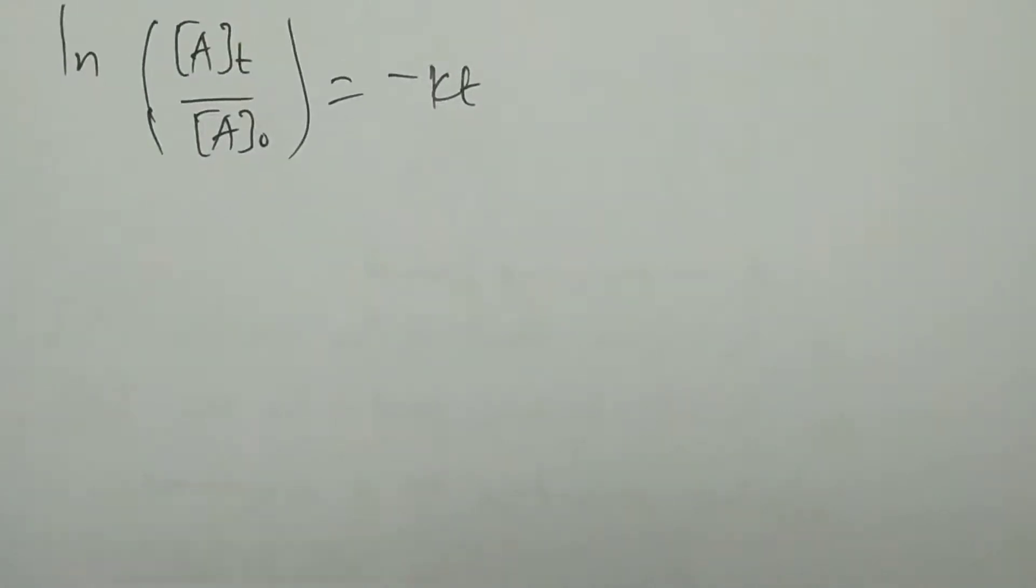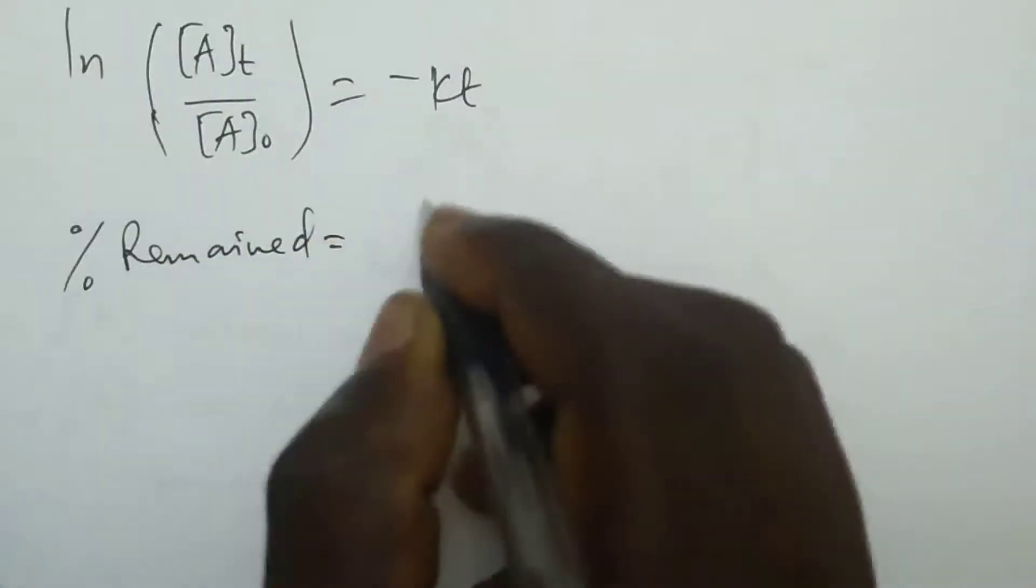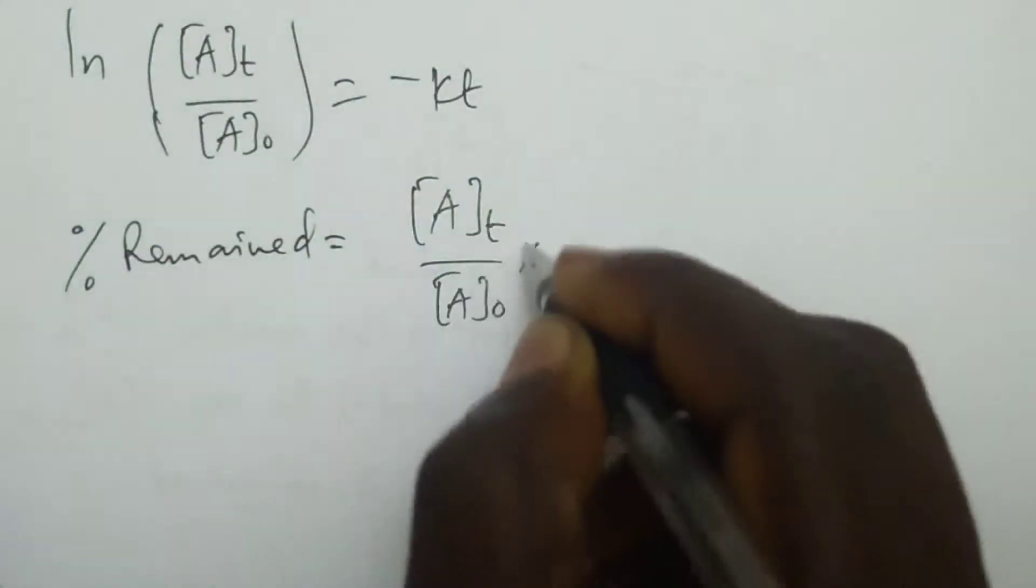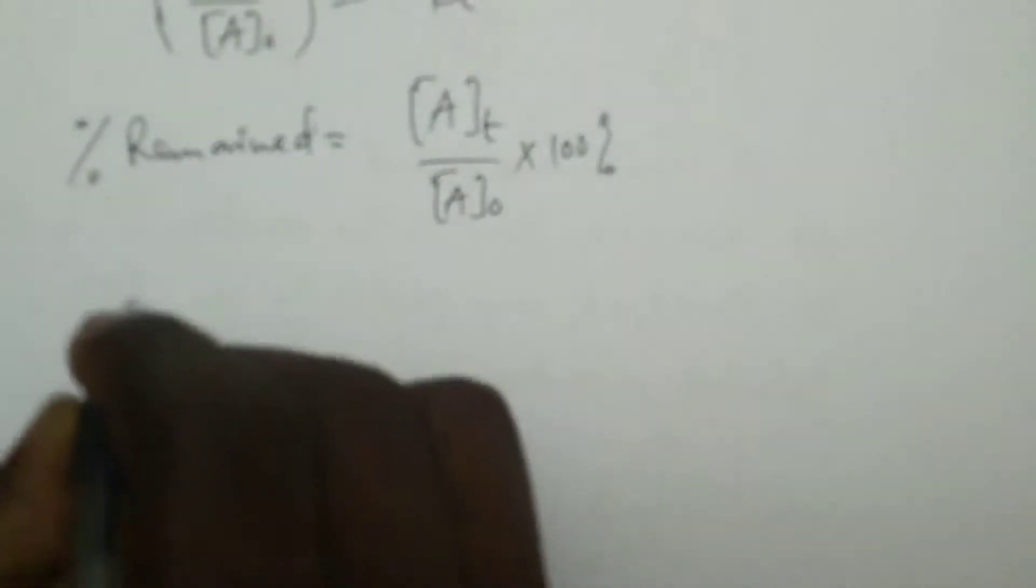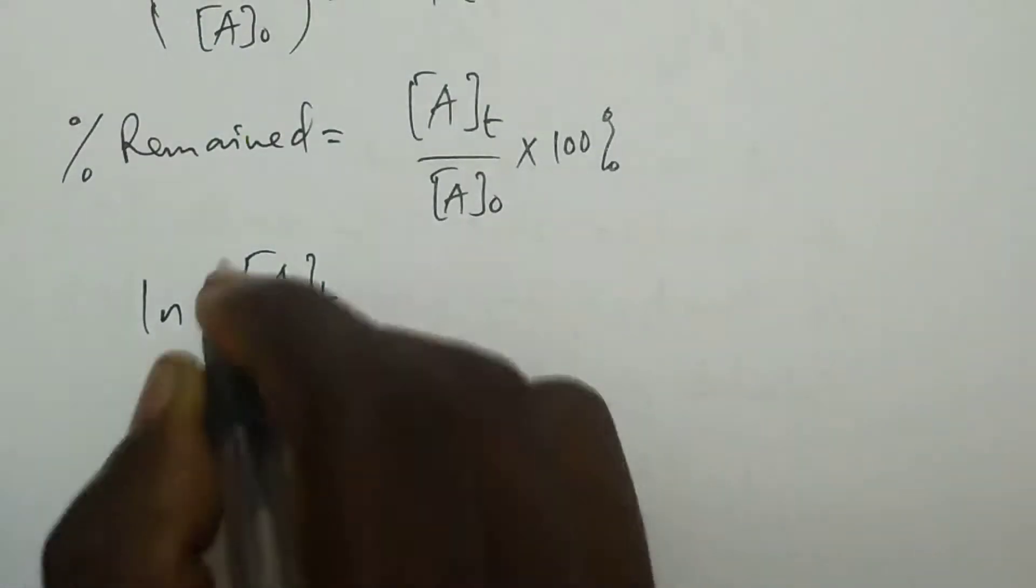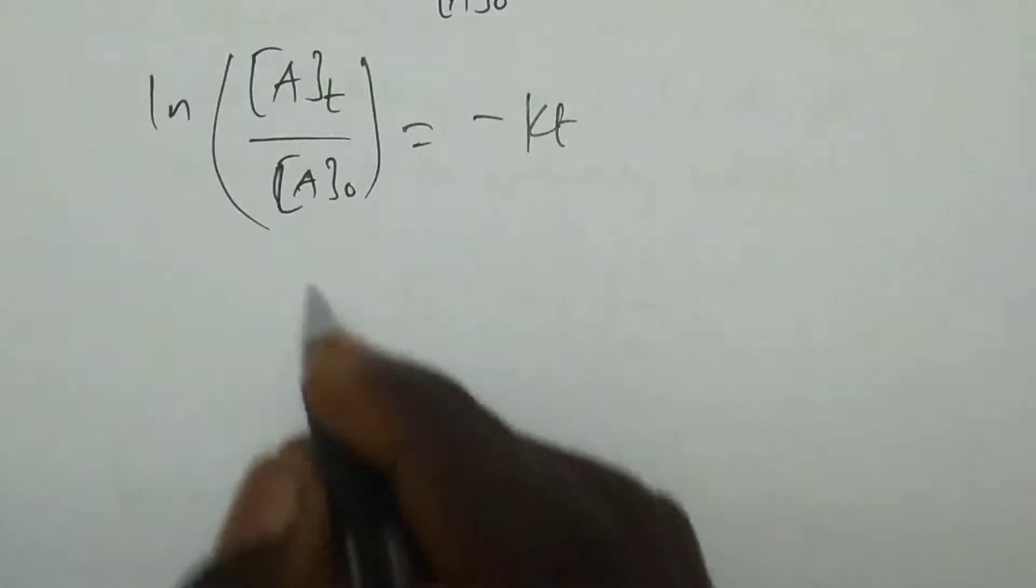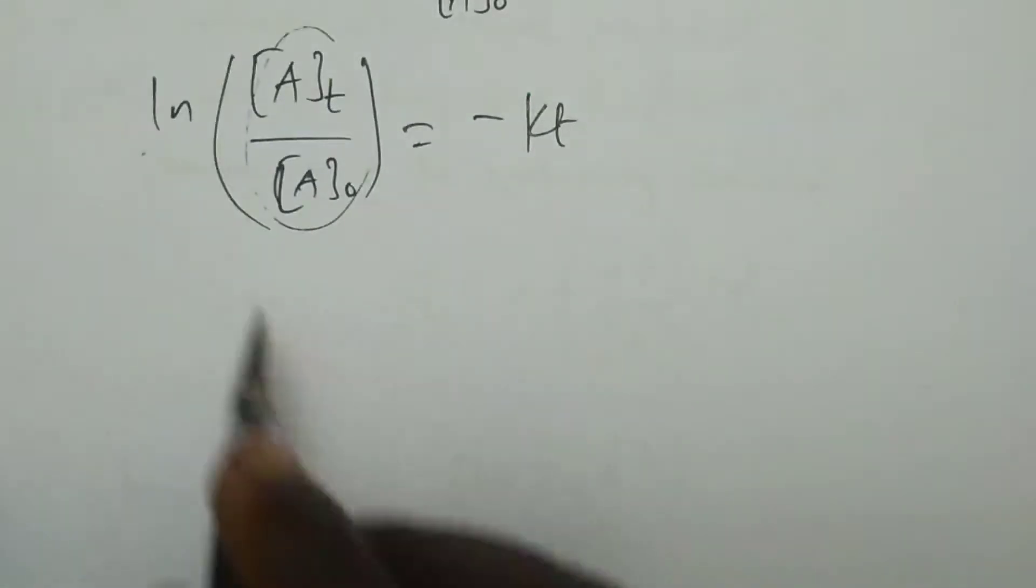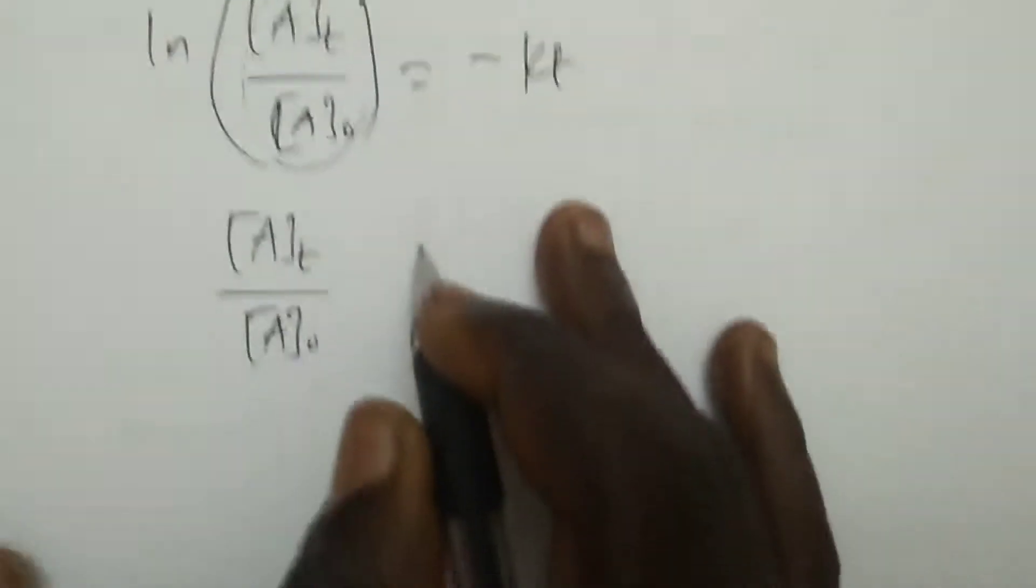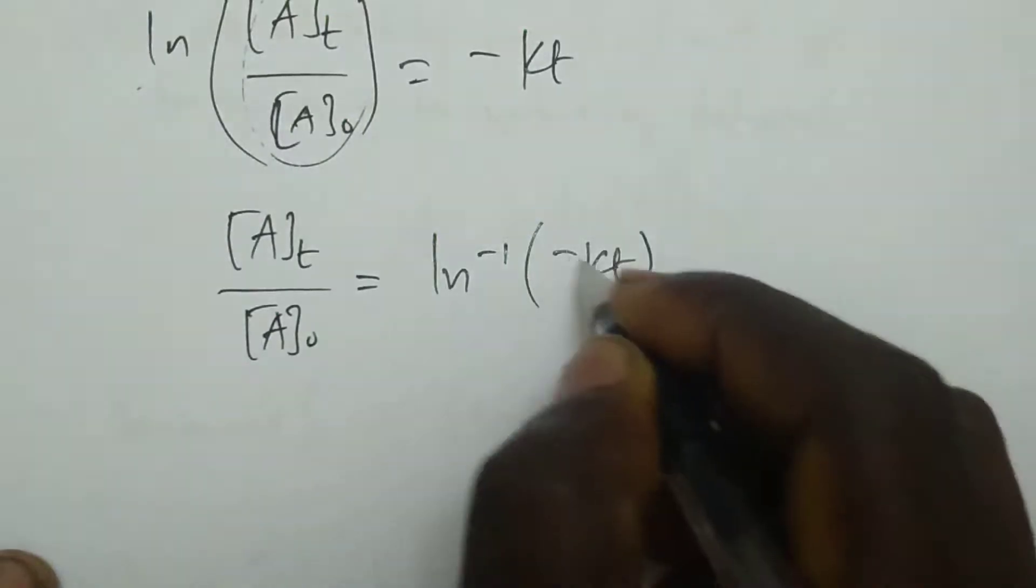For example, to calculate percentage reacted after time T: from ln([A]T/[A]₀) equals negative KT, we can rearrange by taking the inverse ln. So [A]T/[A]₀ equals ln inverse of negative KT.